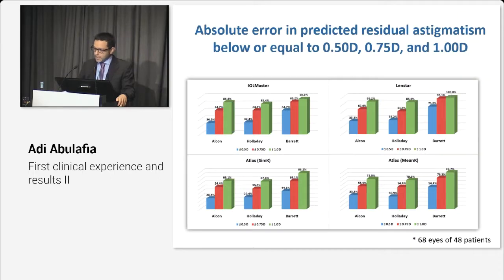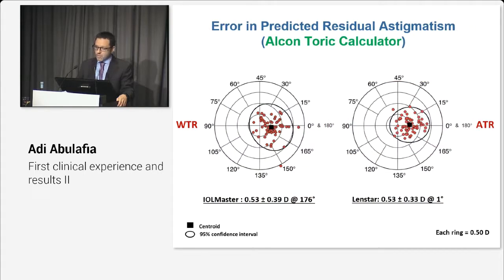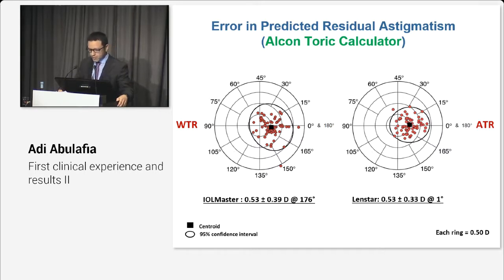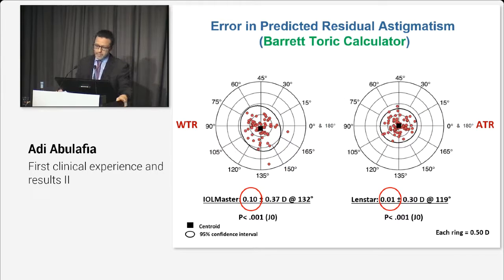The combination of the LENSTAR with the Barrett Toric calculator yielded the highest proportion of eyes with a prediction error of below or equal to 0.5, 0.75, and 1.0 diopter. When using the ALCON Toric calculator, both devices yielded against-the-rule prediction errors with a centroid of more than 0.5 diopters. Similar results were noted for the HOLLADAY Toric calculator. However, using the Barrett Toric calculator yielded the lowest centroid prediction errors, which were close to zero.